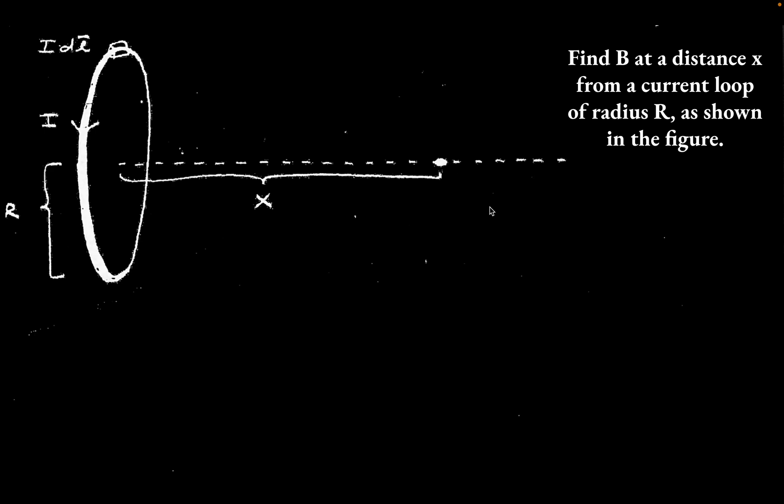What we should do first is write down the Biot-Savart law. What it does is it relates and finds a little chunk of magnetic field dB that is caused by a little chunk of current carrying wire IDL. Here's the little IDL, or here's one of them anyway, and we could find the magnetic field that's caused by just that little piece, and then later we'll find the total by adding them up.